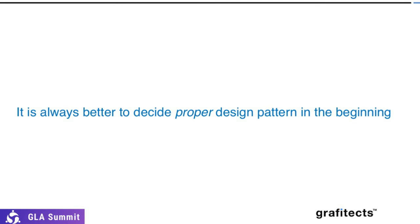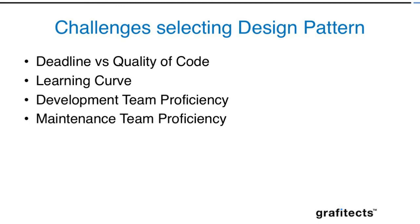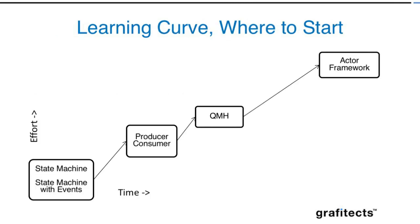These are the challenges: first is deadline versus quality of code. If you have a tight delivery target, you have to balance time and quality — using libraries and reusable code helps here. The second challenge is the learning curve and time investment required. The third is development team proficiency — everyone should know which design pattern is being implemented and how to maintain it. In terms of learning order: state machines are easy to pick up first, then move to producer-consumer, then queued message handler, and finally the actor framework, which requires object-oriented principles.